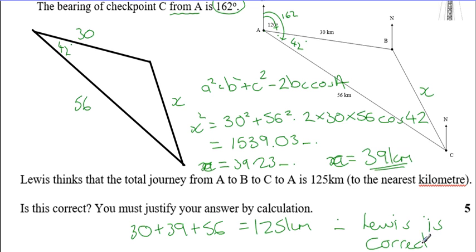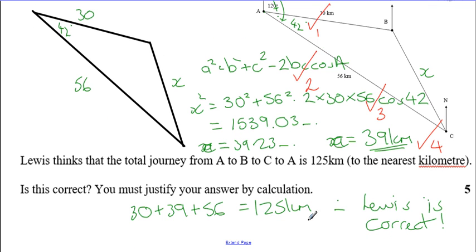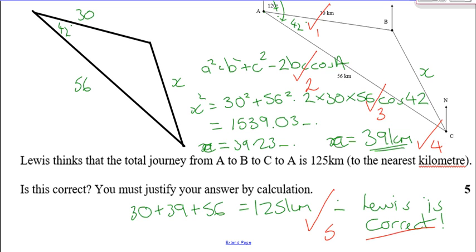Marks for the last question: first mark for getting the angle 42°, second for knowing to use the cosine rule, third for substituting correctly, fourth for getting 39 km, and the fifth mark for adding them together with a statement confirming Lewis is correct. Thank you very much — if there's anything else we can help you with, just don't hesitate to give a shout.